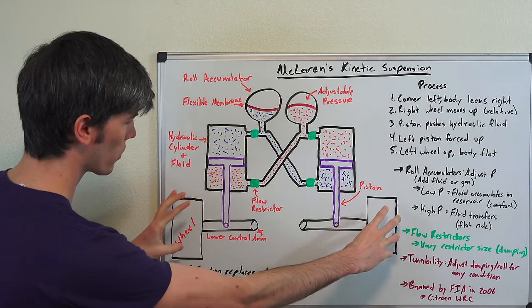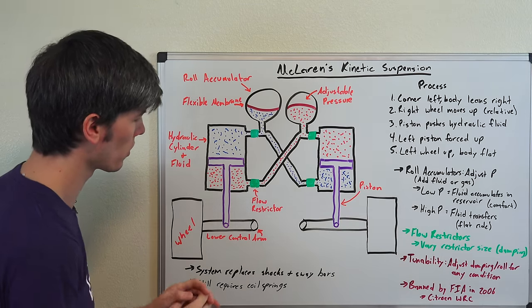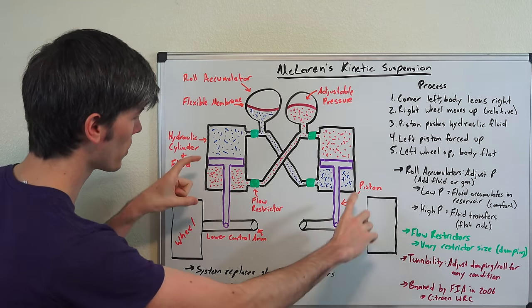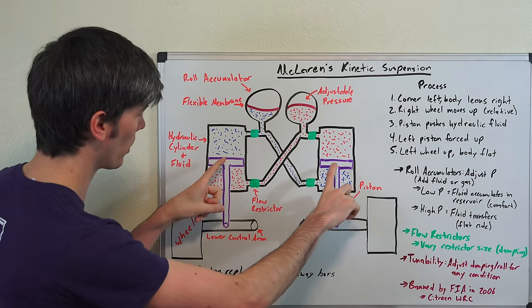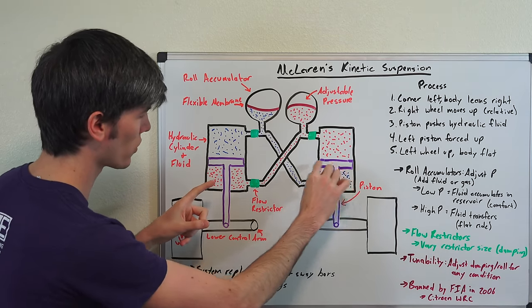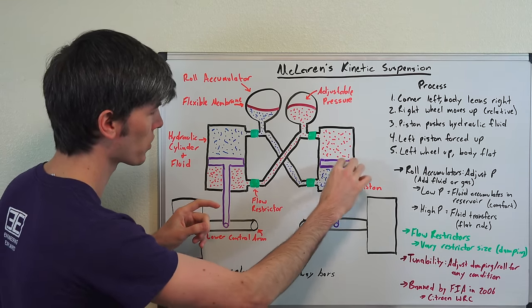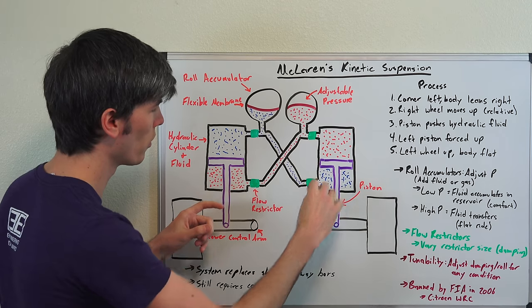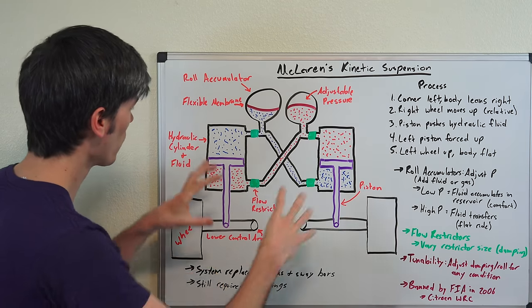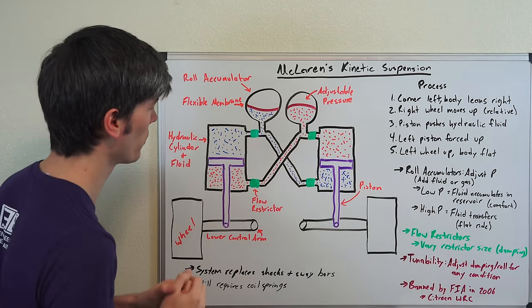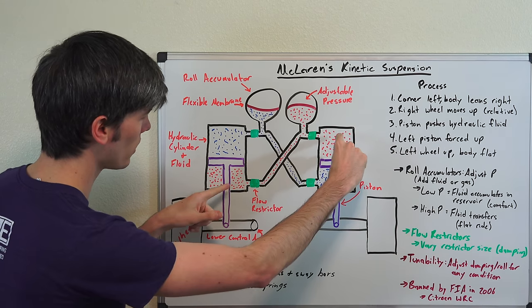Looking at it here, we've got our two tires. This is just one axle that we're looking at. Here's our control arms connected to those control arms are a piston. These pistons are just a flat piston. It doesn't have any pores or anything like that for fluid to move between these two chambers. We have these hydraulic cylinders which are filled with fluid.